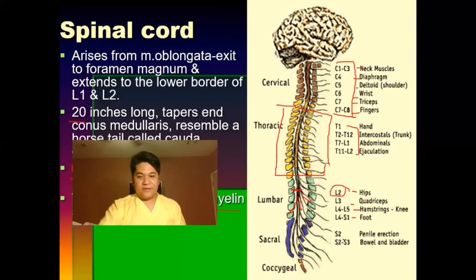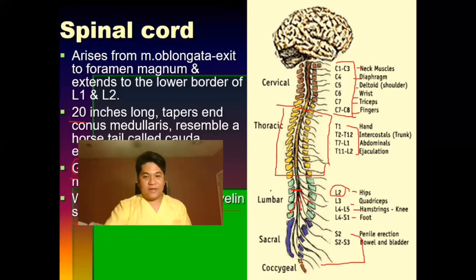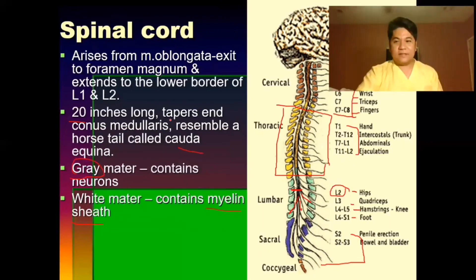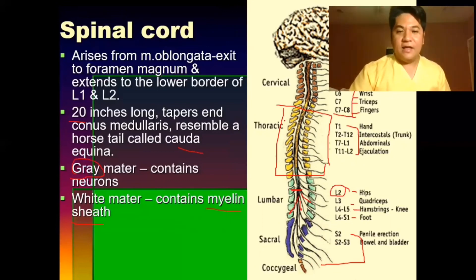The sacral and coccygeal nerves mostly control bowel and bladder function. When surgery is performed in that area, anesthesia is applied so you don't feel anything. Remember these affectations and innervations.